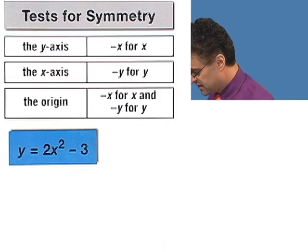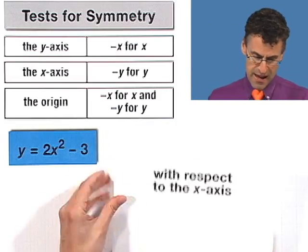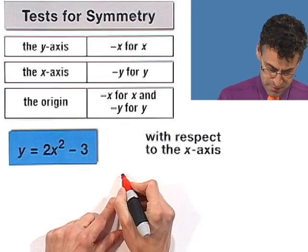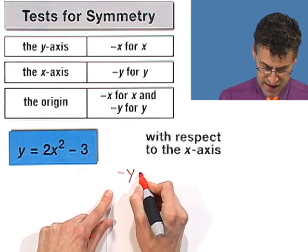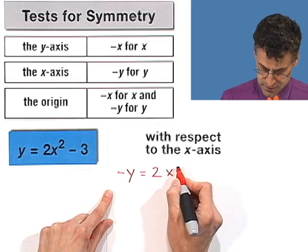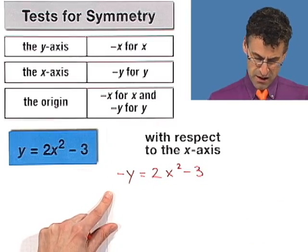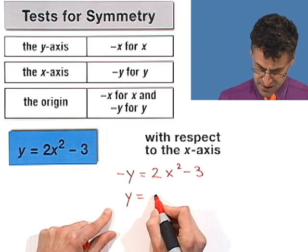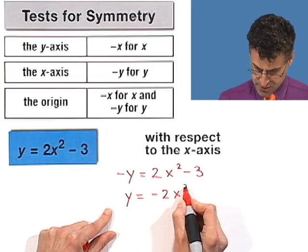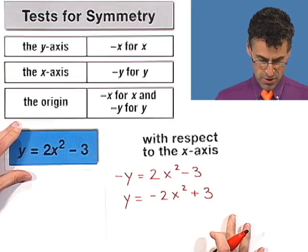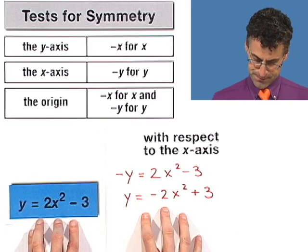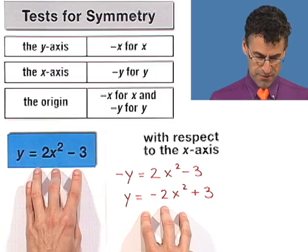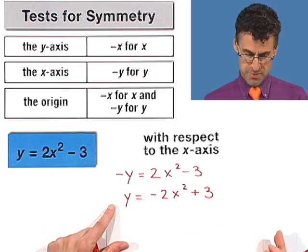Now let's see if it's symmetric with respect to the x-axis. We replace all the y's by negative y's and change nothing else. Solving for y by multiplying both sides by negative 1, we get negative 2x squared plus 3. Are these two equations the same? No, they're not — they're different. Which means that this graph is not symmetric with respect to the x-axis.